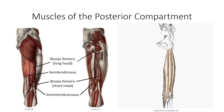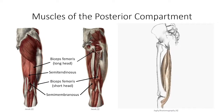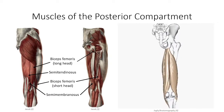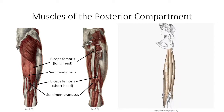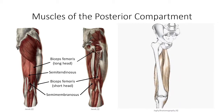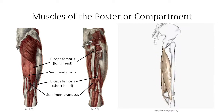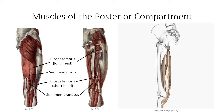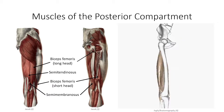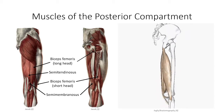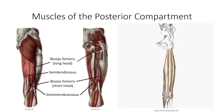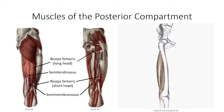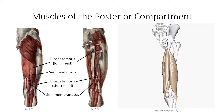The function of the hamstring portion of the posterior compartment is to extend the hip while flexing the knee. If the knee extensors act synergistically to resist flexion, the result is pure extension at the hip. In this capacity, the hamstrings are the principal hip extensors in walking. Note that the short head of biceps femoris can only contribute to knee flexion — it has no function at the hip joint.